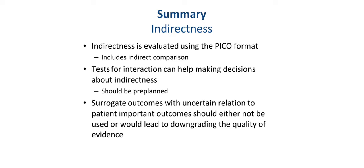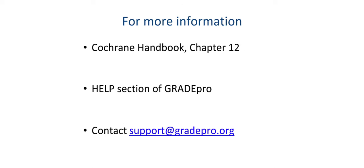In summary, indirectness is evaluated using the PICO format and includes indirect comparisons. Tests for interaction can help make decisions about indirectness when preparing separate Summary of Findings tables, and these should be pre-planned. Surrogate outcomes with uncertain relation to patient-important outcomes should either not be used, or would lead to downgrading the quality of the body of evidence when presented in Summary of Findings tables. For more information, please see Cochrane Handbook Chapter 12, the help section in the GRADEpro software, also called GRADEpro software.